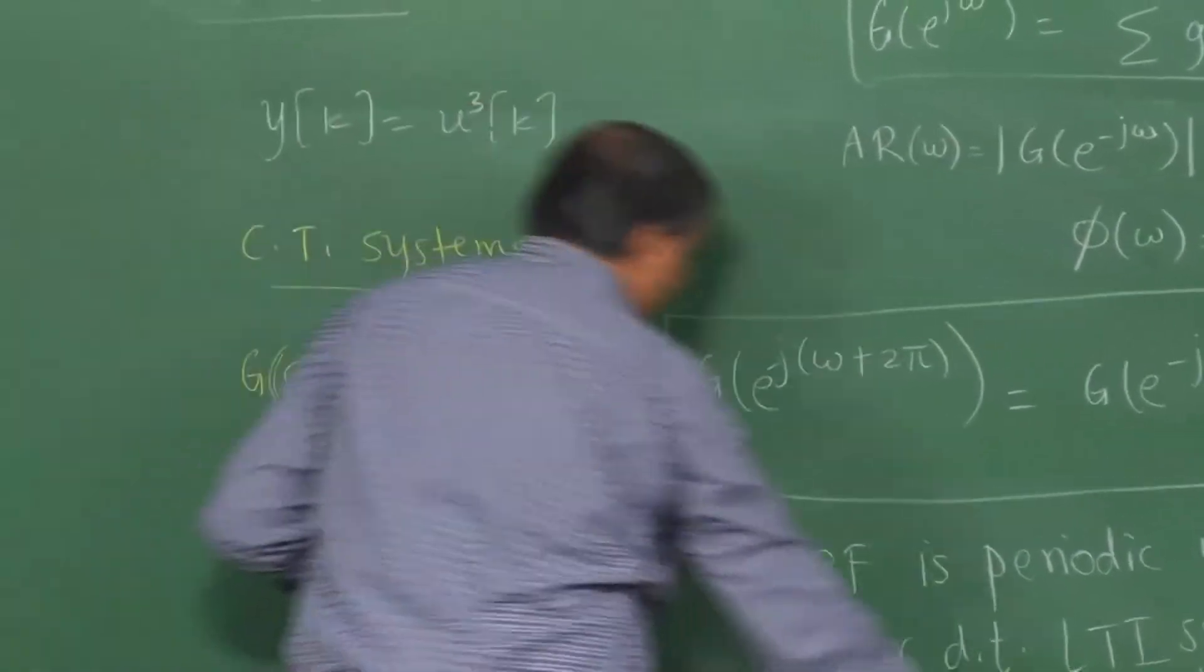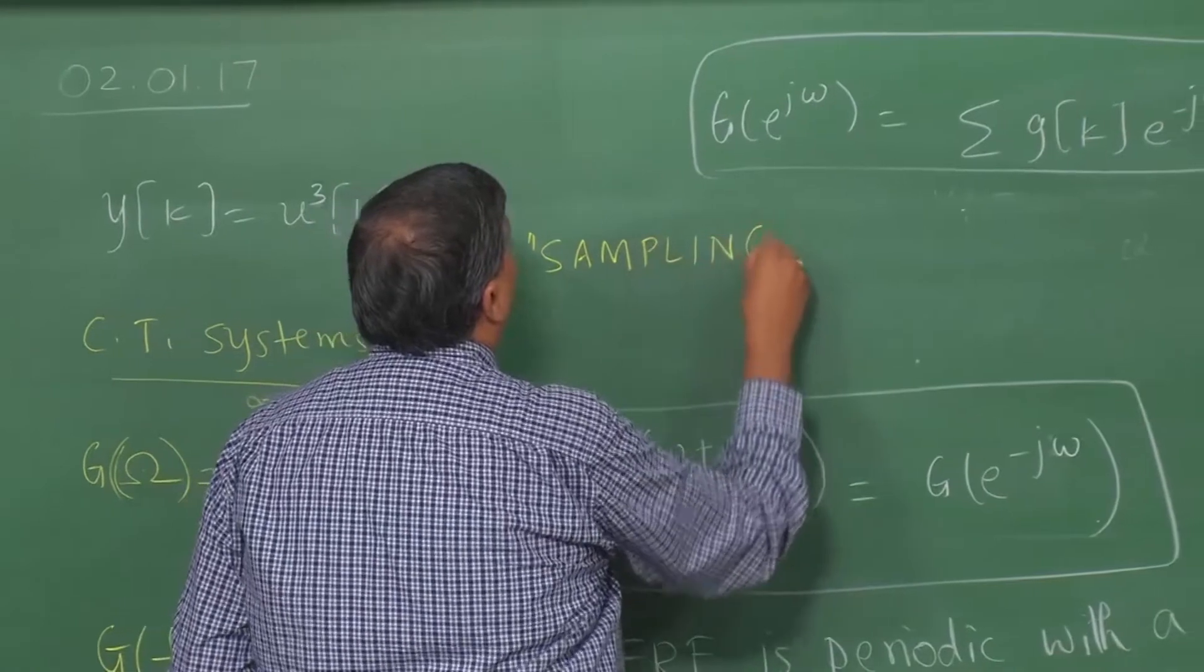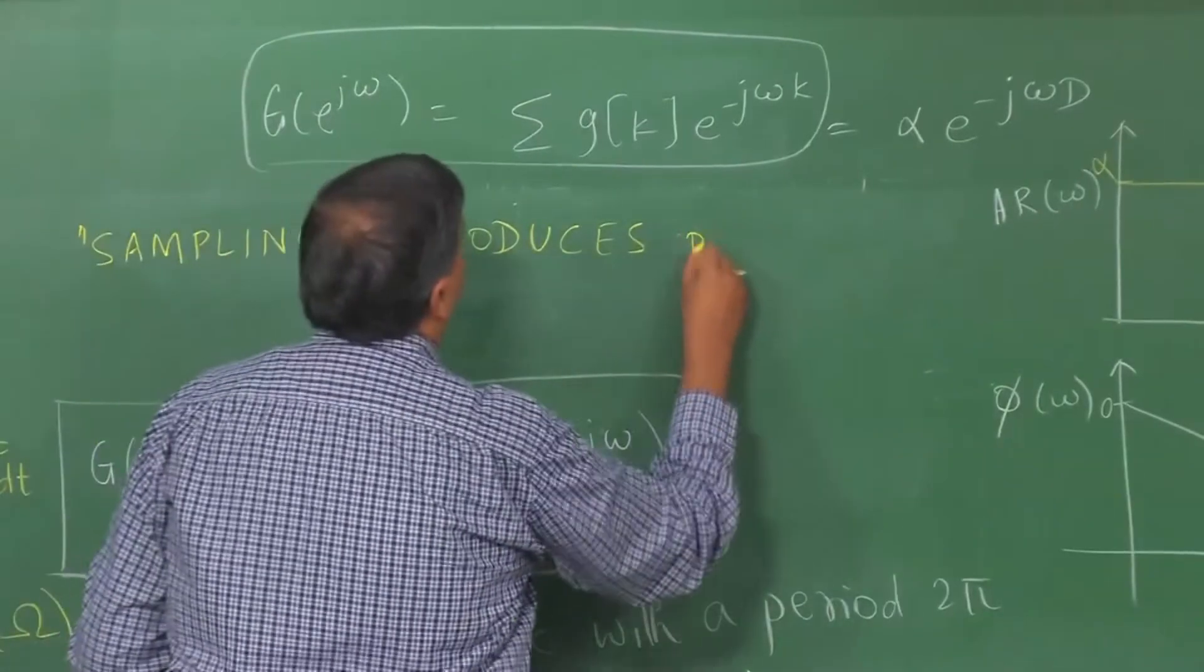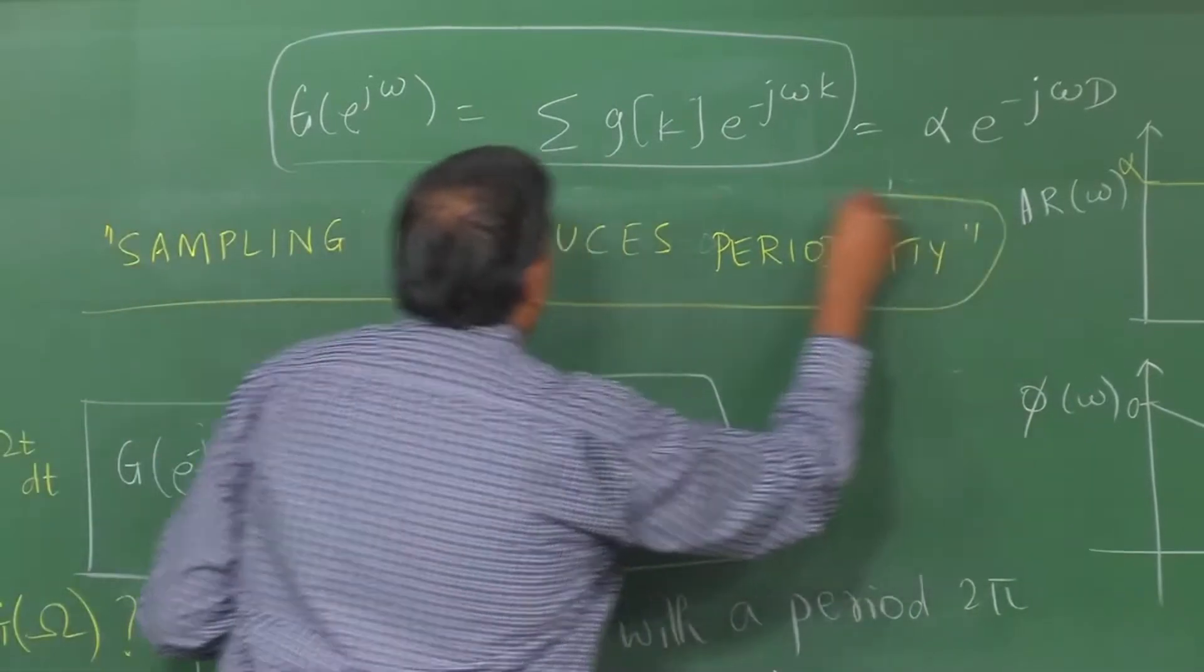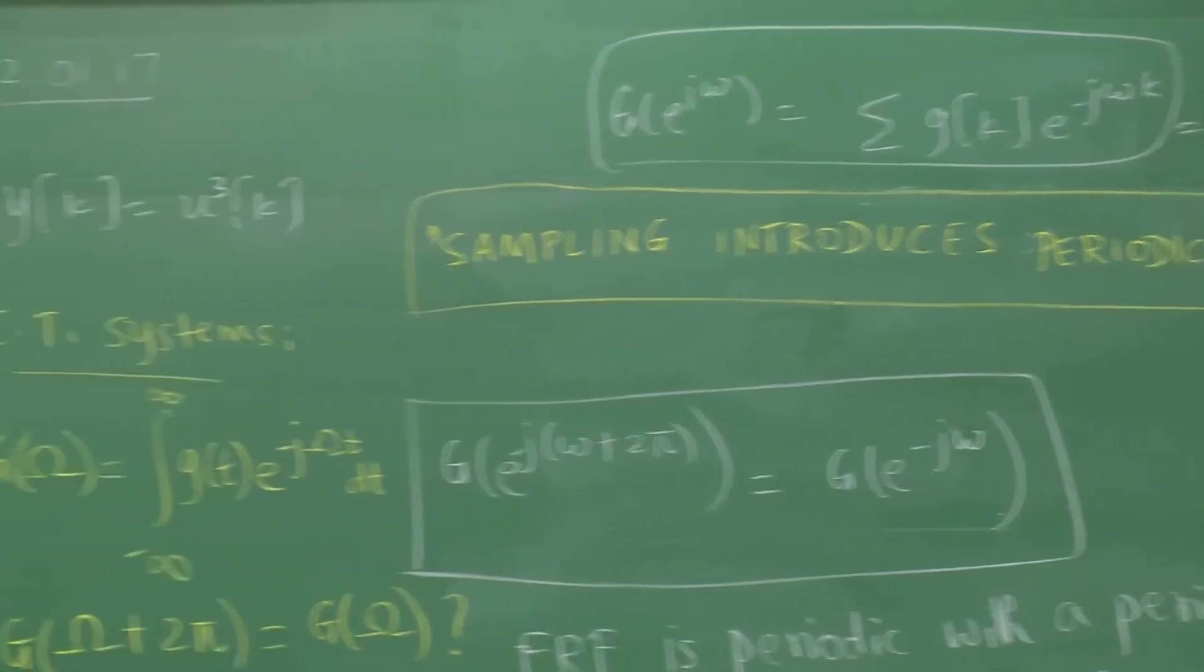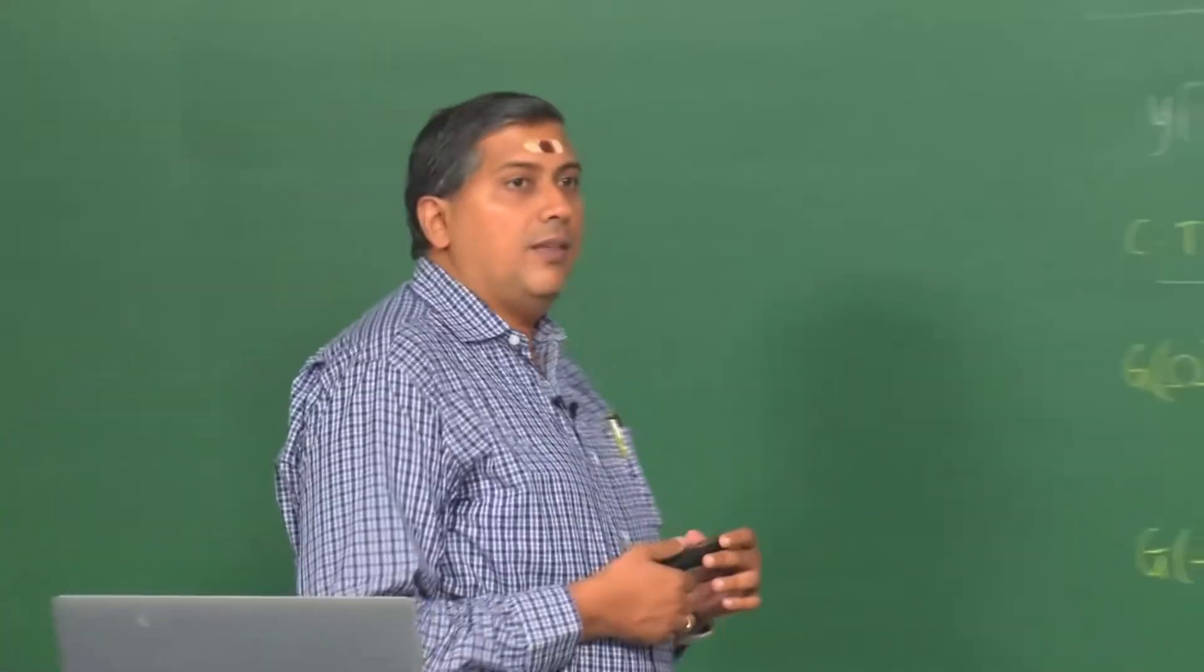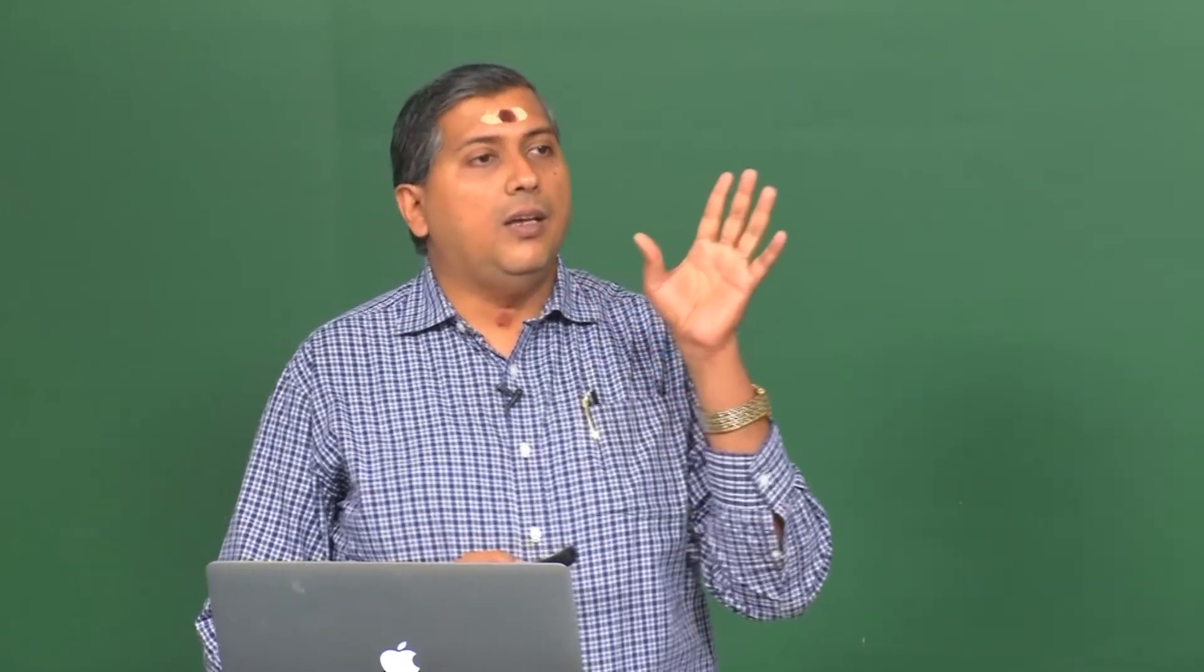This is not true for continuous time systems. If I ask you whether G of omega plus 2 pi is it the same as G of big omega, is this true? What do you think? Yes or no? How do you verify? Substitute there. What do you get here? You will get an additional factor of e to the minus j 2 pi t. Will that be one? That tells you the prime difference between the behavior of discrete time and continuous time systems. Why? Because in continuous time, t is on the real axis, whereas in discrete time, k is on the integer axis. Why is k on the integer axis? Because it is a sampling instant. So there is another way of saying what we have said just now. We say that sampling introduces periodicity.